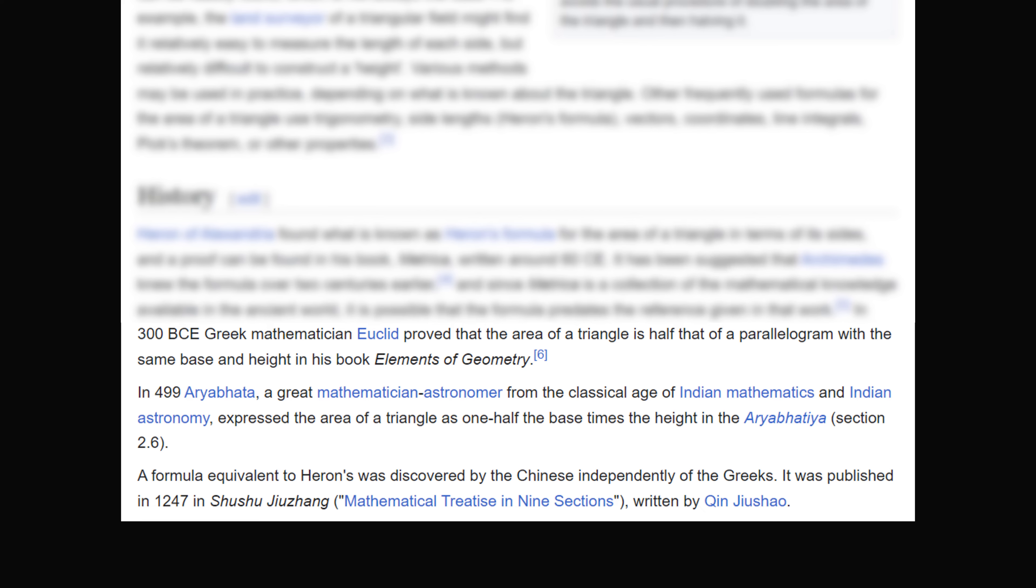In 499, Aryabhata, a great mathematician astronomer from the classical age of Indian mathematics and Indian astronomy, expressed the area of a triangle as one half the base times the height in the Aryabhatiya, section 2.6. So it actually looks to me that it comes from Aryabhata. So Euclid did prove it's equal to half that of a parallelogram, but it doesn't actually say what the formula for the parallelogram is. So it's quite interesting to learn a bit of history that I had never learned before for such an amazing formula that we just take for granted. The area of a triangle is equal to one half times the base times the height.